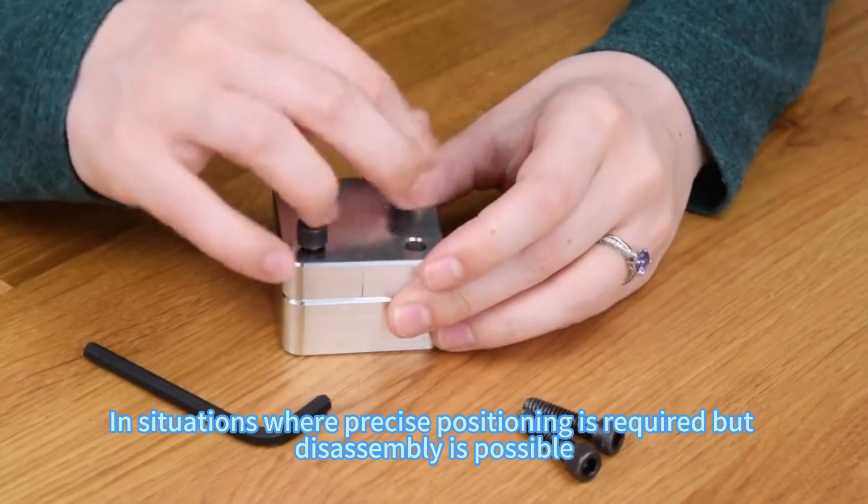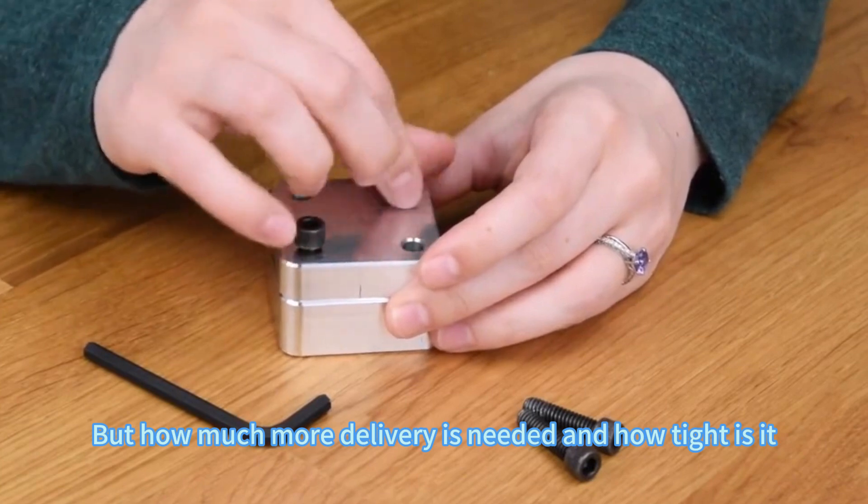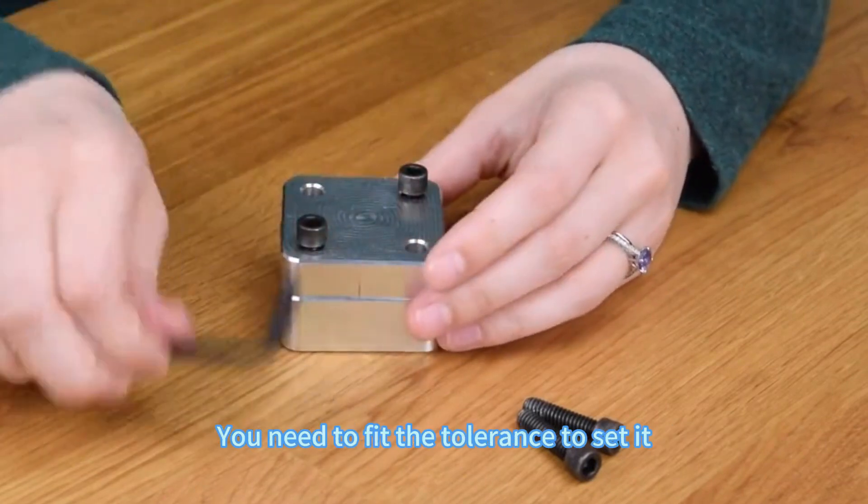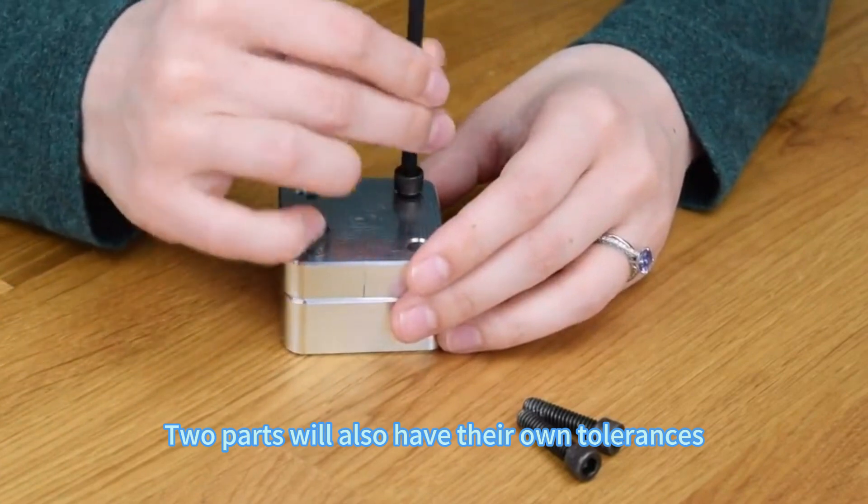In situations where precise positioning is required but disassembly is possible, you need to determine how much clearance or tightness is needed. You need the fit tolerance to set it. In actual cooperation, two parts will also have their own tolerances that need to be considered.